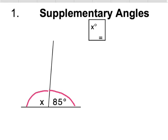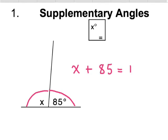What do supplementary angles have to add up to? 180. So angle X plus 85 has to equal 180 degrees.